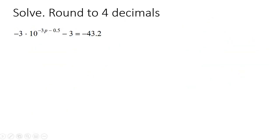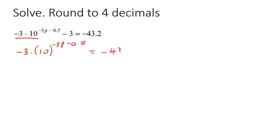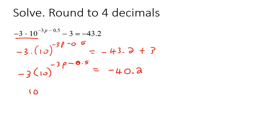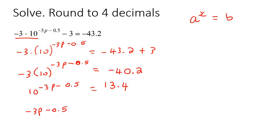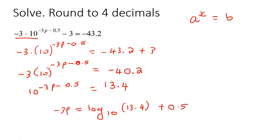For the last example, the goal is to get the exponential part by itself with everything else on the other side. Take a number over — remember these cannot multiply together. So it becomes negative 43.2 add 3, which is negative 40.2. Divide both sides by negative 3, which gives 13.4. Now we have the format a to the x equals b. Take the exponent, make that equal to log of the base, which is this number, and then the other number. To get p by itself, add the negative 0.5 to the other side, then divide both sides by negative 3. You should get negative 0.5424 to 4 decimal places.